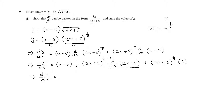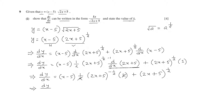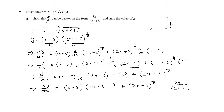Now dy over dx equals x minus 5 times half times 2x plus 5 whole to the power minus half, then times 2 — since d over dx of 2x plus 5 is 2 — plus 2x plus 5 whole to the power half. The 2 from the chain rule cancels the half, giving us x minus 5 times 2x plus 5 whole to the power minus half, plus 2x plus 5 whole to the power half. We need to express this in the form kx divided by square root of 2x plus 5, so further simplification is needed.